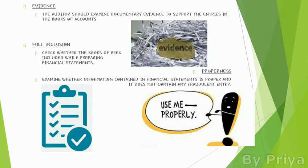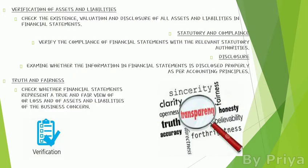For properness, the auditor examines whether the information contained in the financial statement is proper and does not contain any fraudulent entry. Some employees may take money from the business and record it under different transactions, which the auditor must detect.